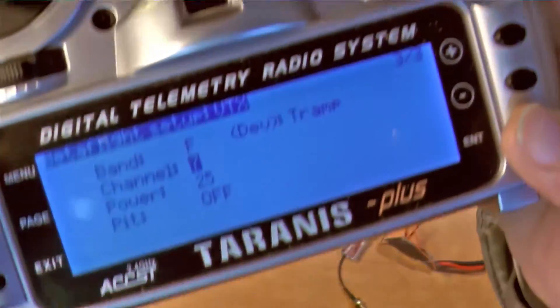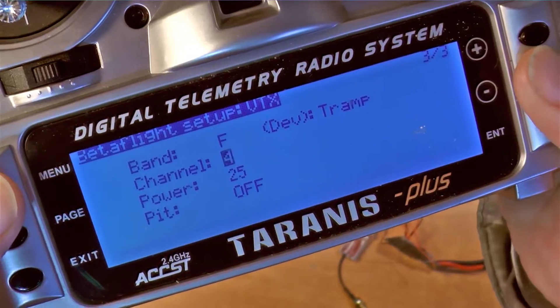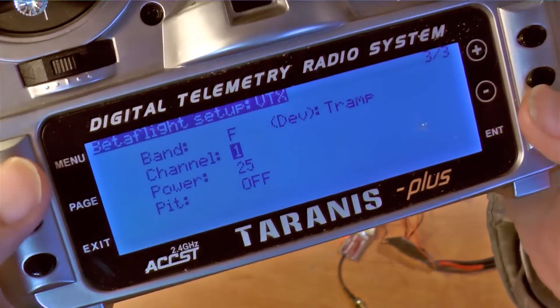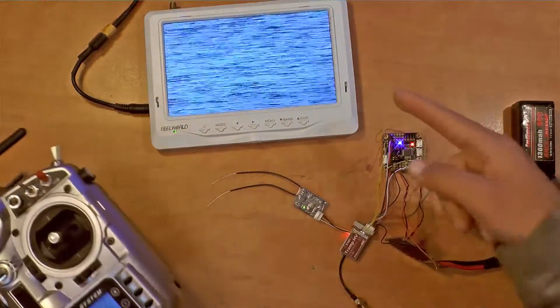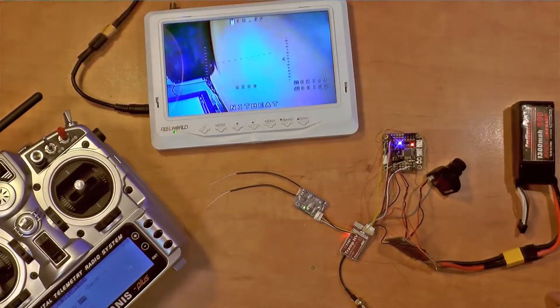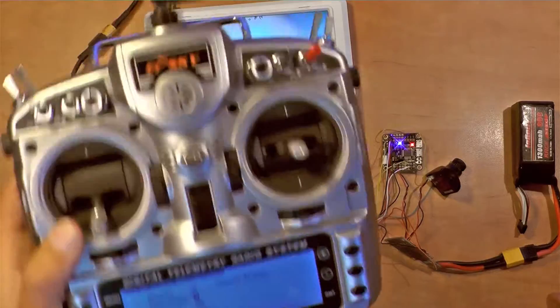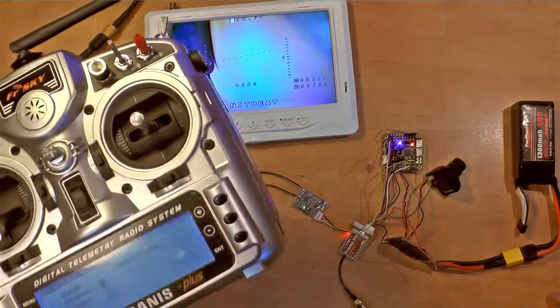Now it's on channel 1 and I'm gonna save and I'm gonna change here the VTX setting to channel 1. Save page. And I should see a picture here. There you go. There you go. It's working. It's great. It's awesome.